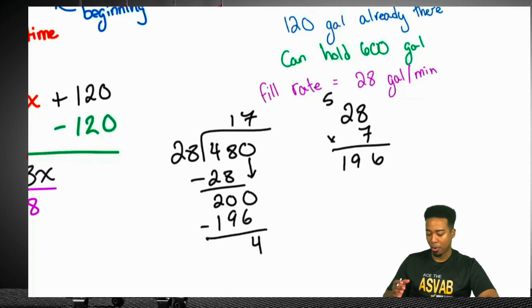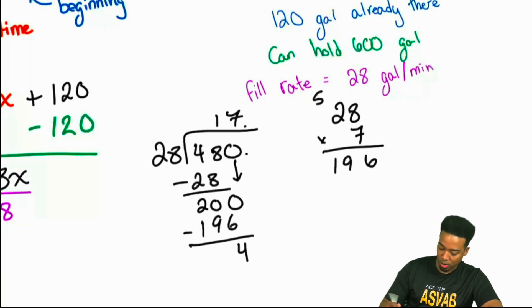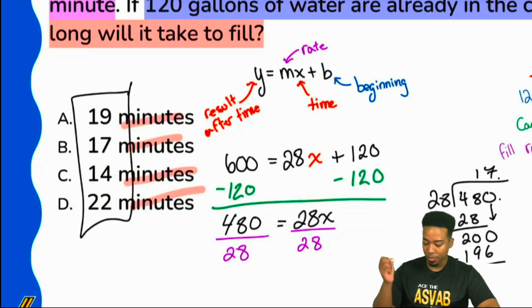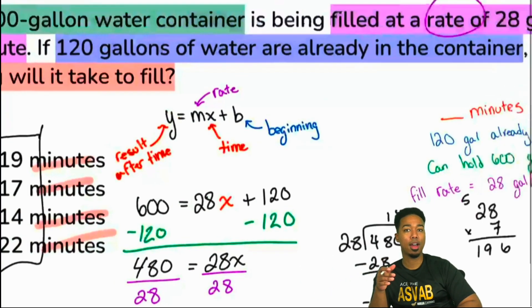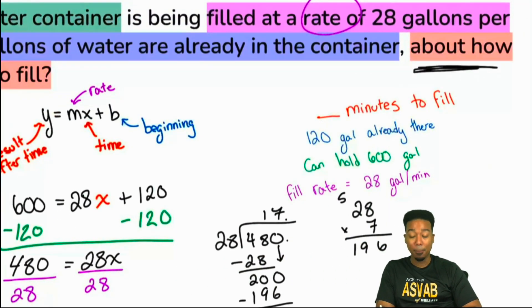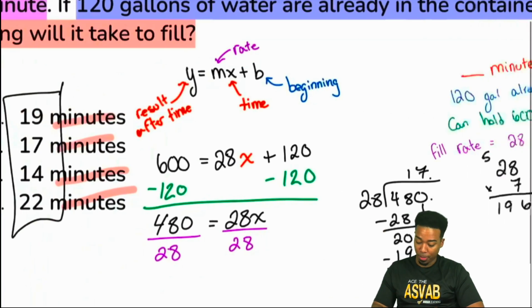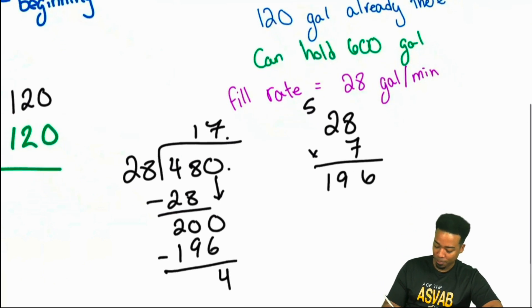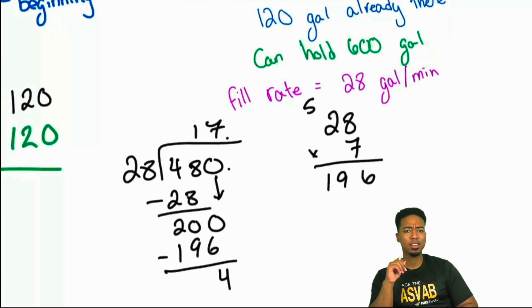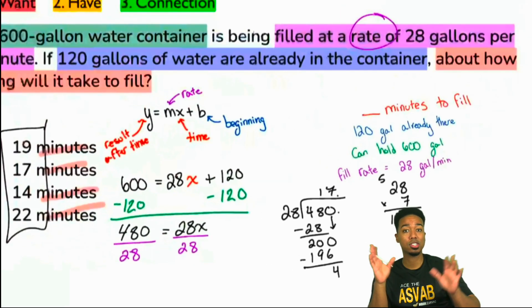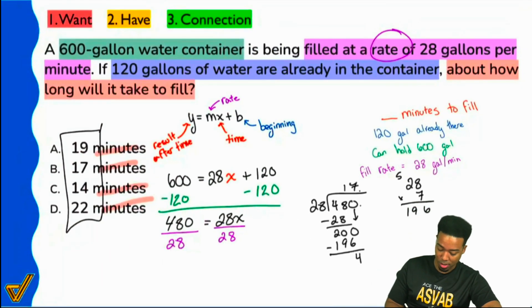So my party people, from here, notice that our answer choices - again it says about how many minutes. It says about how many minutes. And so we have 17 with a decimal, but 4 out of 28, the remaining 4 out of 28, that's not going to be enough to take us up to 18. That's going to stay down at 17. And so we can actually say that we're done right here and say that B is the answer. And there we are, and we're good.